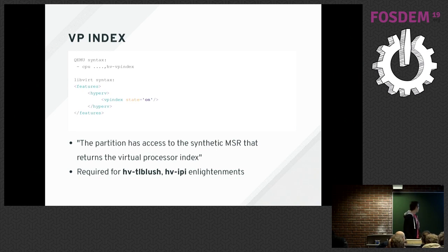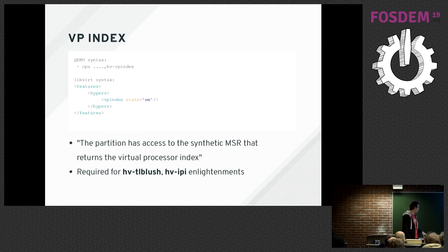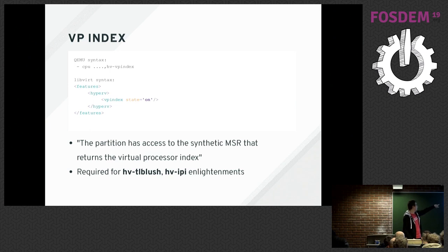Next is VP (virtual processor) index — it creates a virtual model-specific register where each CPU can read its own number. In KVM they almost always match the order in which they were created. We need this MSR for some other features: Windows won't use PV TLB flush and PV IPIs without it, because in these hypercalls CPUs are specified in VP index terms.